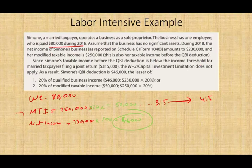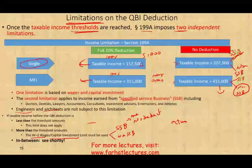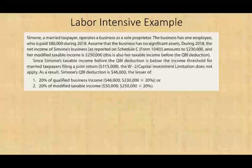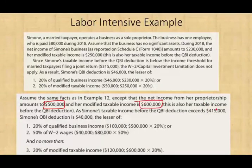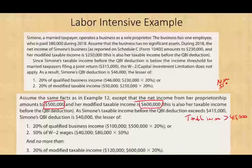In that example, whether this business is an SSB or non-SSB doesn't matter because the taxable income falls below $315,000 — so it's straightforward. Now let's add the limitation rule. Assume the same facts as the previous example, except net income from the proprietorship is $500,000 and modified taxable income is $600,000. The taxable income is greater than $415,000. We're going to assume this business is a non-SSB — if it were an SSB, there would be no deduction at all.